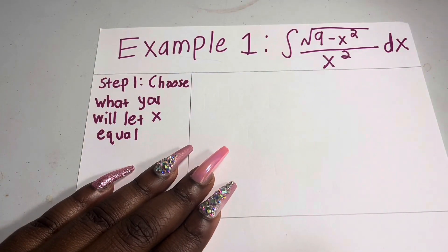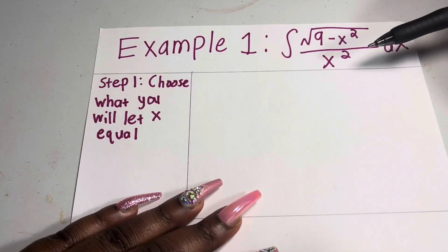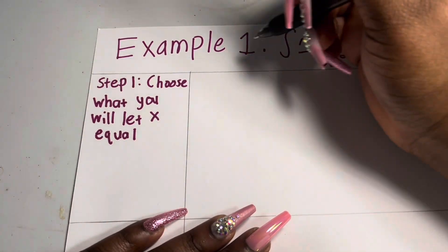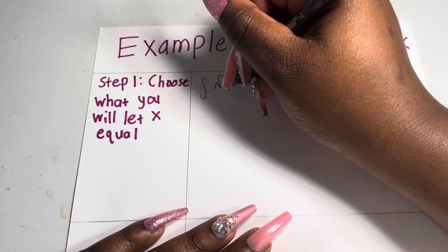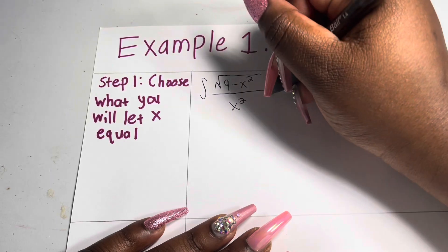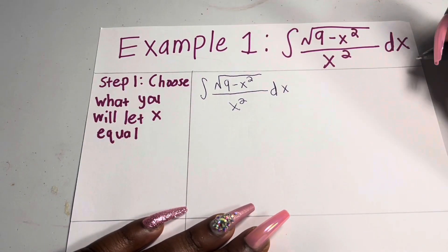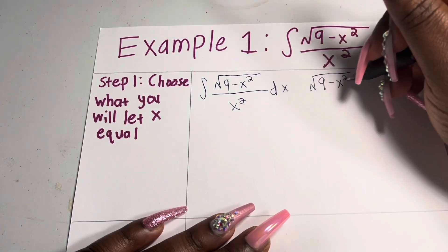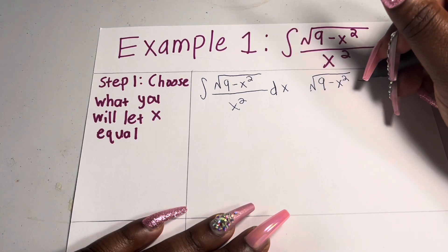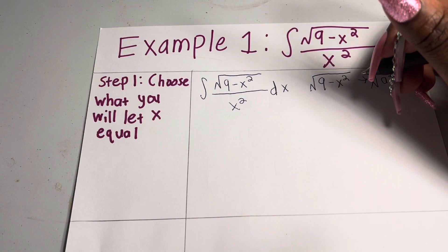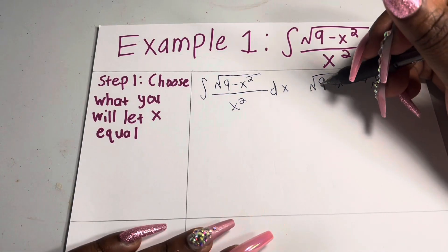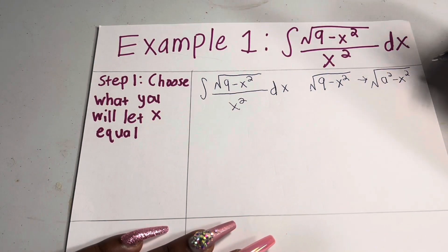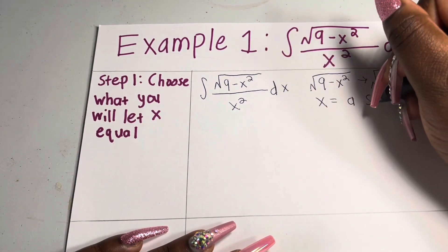Let's start with Example 1: the integral of √(9−x²)/x² dx. Step 1: choose what we let x equal. The square root here is √(9−x²), which matches the format √(a²−x²) — x² is on the right, there's a minus sign, and 9 is the constant. Because of that, we let x = a sinθ. Since 9 = a², we take the square root of both sides to get a = 3. So x = 3 sinθ.